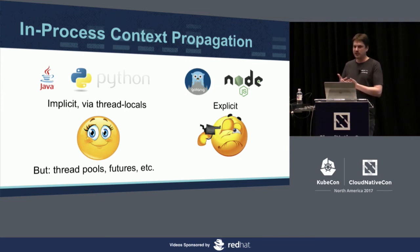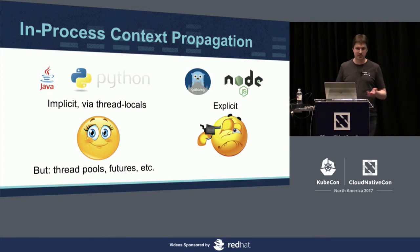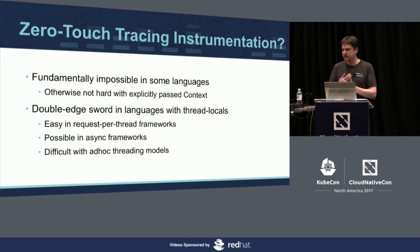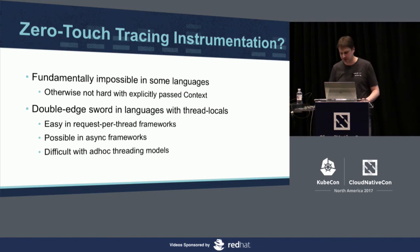Fortunately in Go, the context object is a standard language feature, and Go encourages you to use it throughout the application. So at Uber, tracing Go applications wasn't that hard because most people already knew how to pass context around — it existed for timeouts and cancellation too, so we could piggyback on it. Is zero-trace instrumentation possible? Fundamentally not in some languages like Go, but if you do pass context, it becomes almost free.